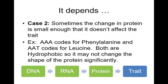In case two, the change in protein could be small enough that it might not actually impact the trait. For example, AAA codes for phenylalanine and AAT codes for leucine — both are hydrophobic. So it might not actually change the shape of the protein significantly. You might have a change in DNA and RNA, the amino acids might change slightly, but the shape doesn't change so the trait stays the same.